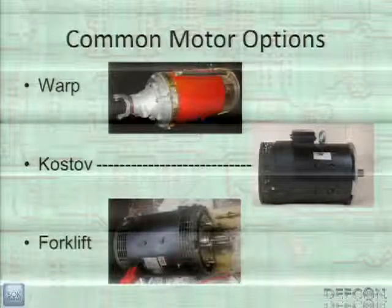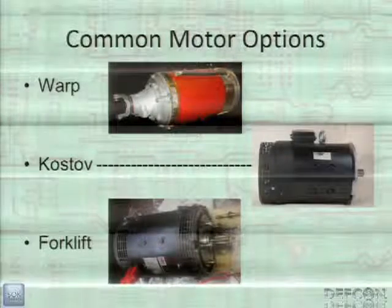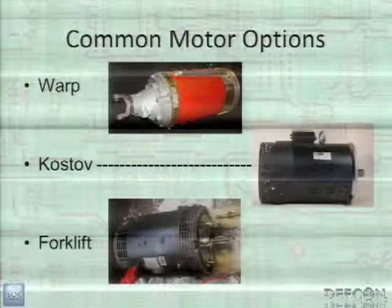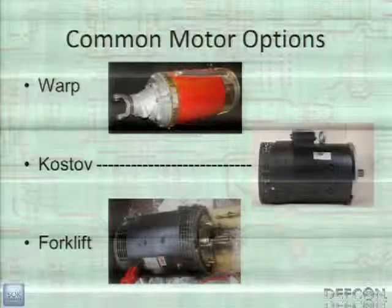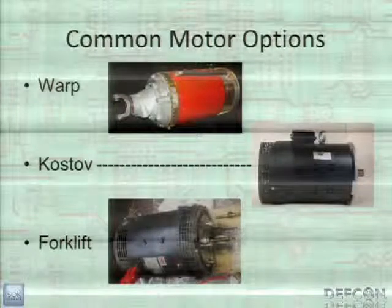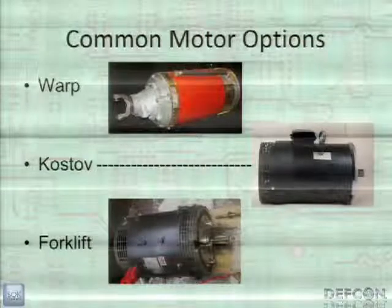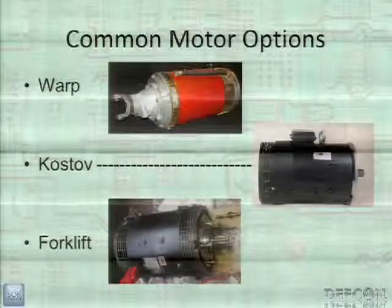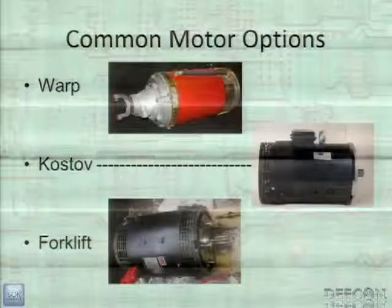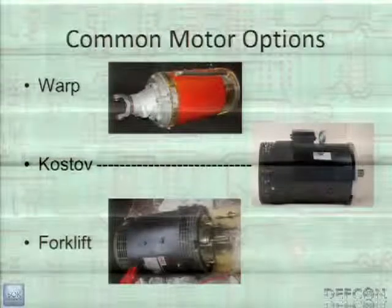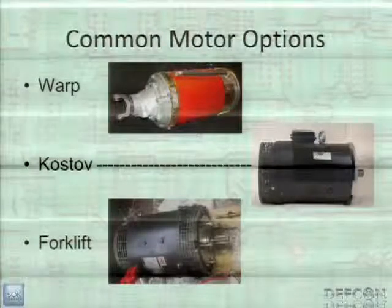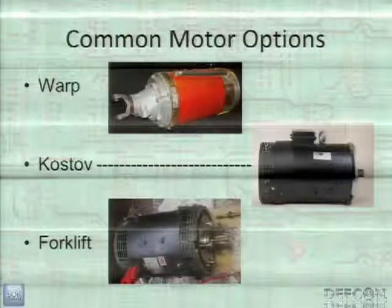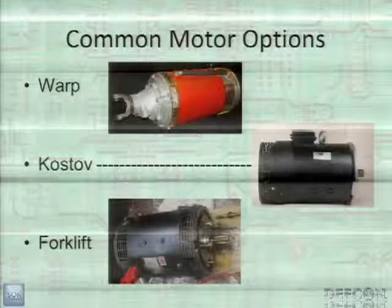Common motor options include Warp motors in the US, and the Impulse motor which is shorter and fits better in cars like VW Bugs. In Europe, Kostov motors are very popular. Motors are heavy — typically 60 to 150 pounds — so shipping costs can be high, which is why Europeans prefer local options. A popular low-cost option is forklift motors: take a 30-year-old motor, recondition it, up the voltage, and you have a road-going motor for under $200 total.